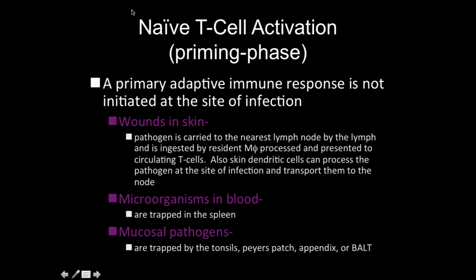When we have been talking about naive T-cell activation, we're going into a better understanding of the mechanisms of how the immune system works, as opposed to just the basic nuts and bolts of everything. To start this whole off, we begin with what's known as a priming phase. This is the phase where the naive T-cells are going to be exposed to some type of a pathogen-associated molecular pattern.